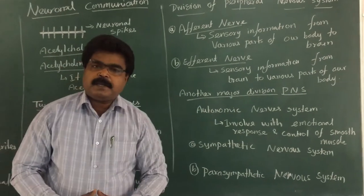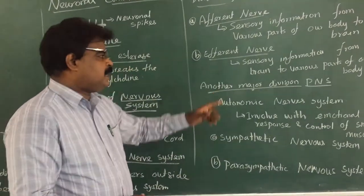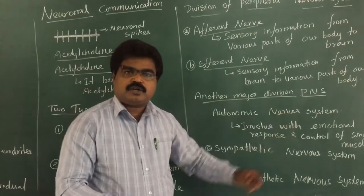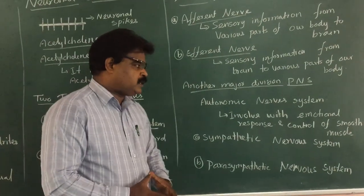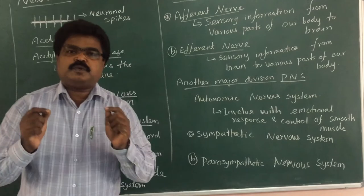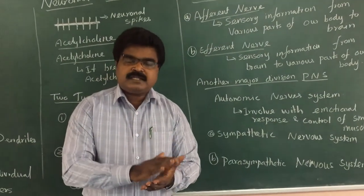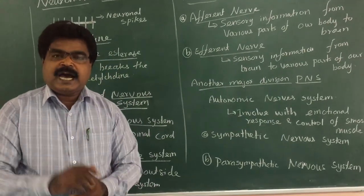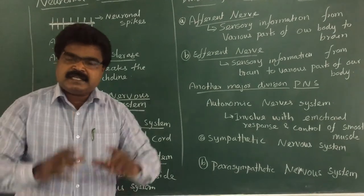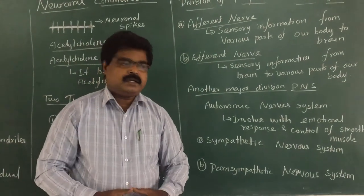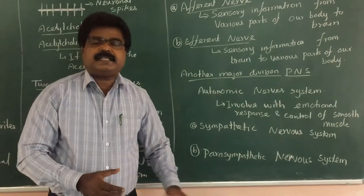Another major division of the Peripheral Nervous System is the Autonomic Nervous System. The Autonomic Nervous System involves emotional response and control of smooth muscles. It is divided into two types: the Sympathetic Nervous System and the Parasympathetic Nervous System.